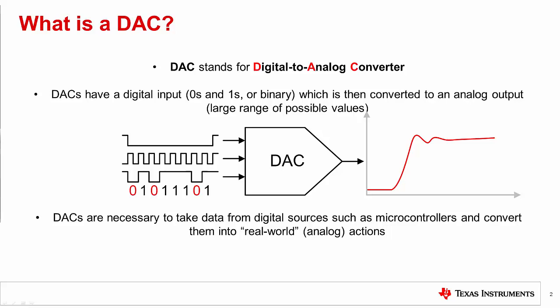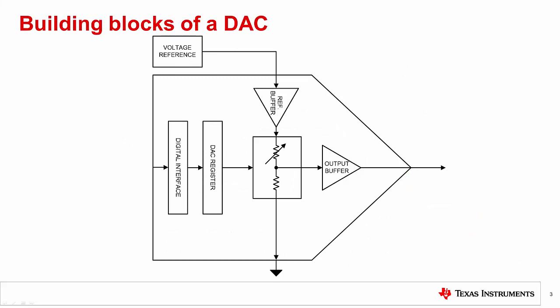In practical terms a DAC takes a digital input from some sort of microcontroller and converts it into a real-world action by producing some sort of desired change to a system. These actions can be used to calibrate a system, set bias points, or create arbitrary waveforms.